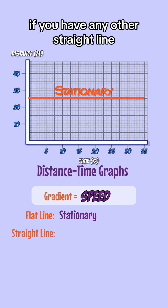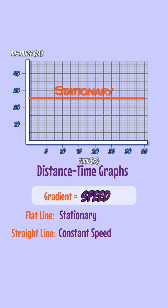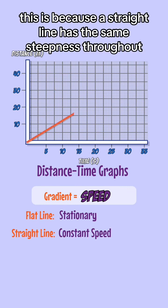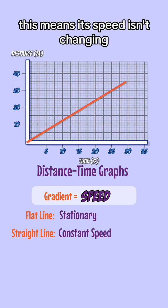If you have any other straight line, it means the object is traveling at a constant speed. This is because a straight line has the same steepness throughout, so its gradient isn't changing. This means its speed isn't changing.